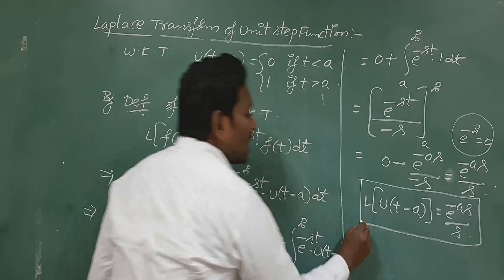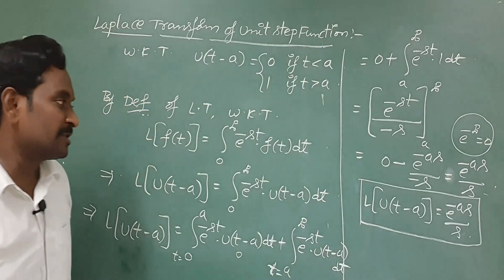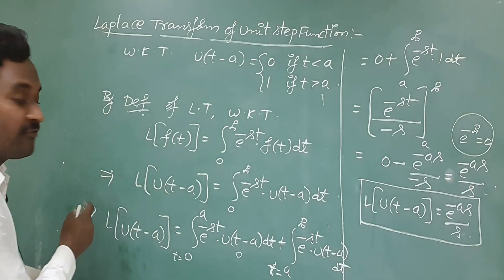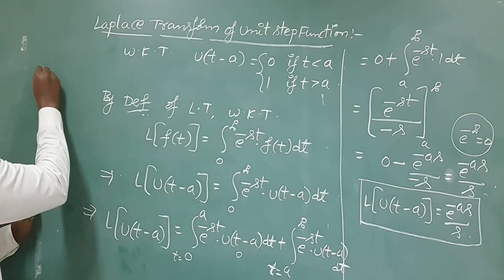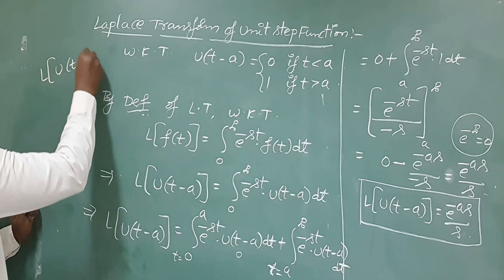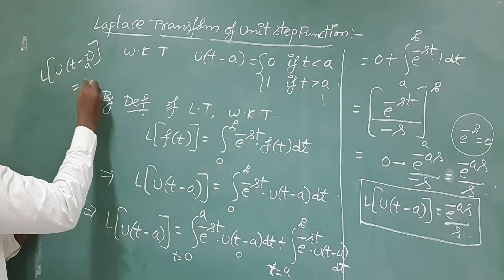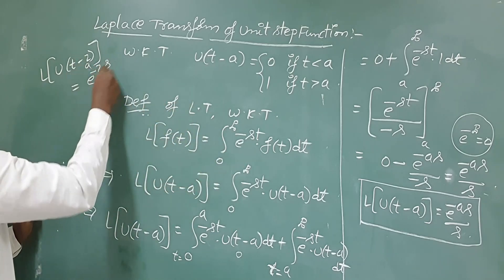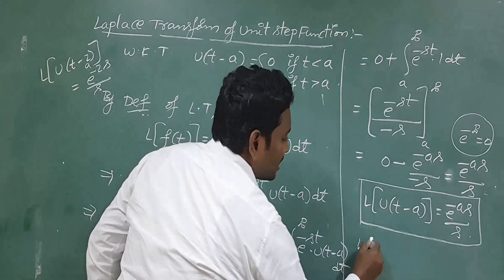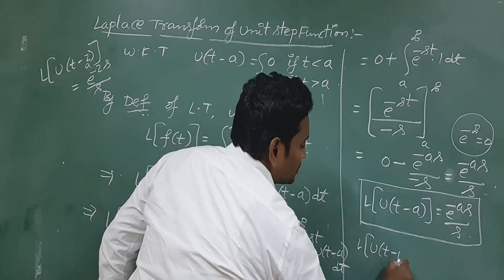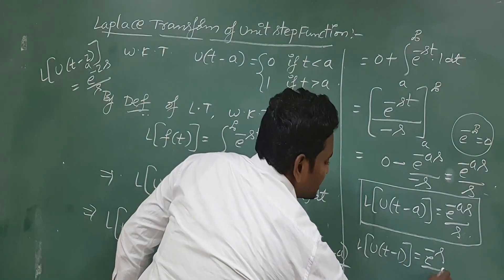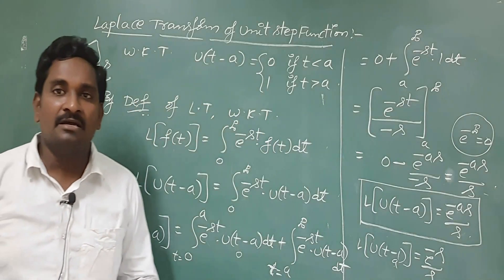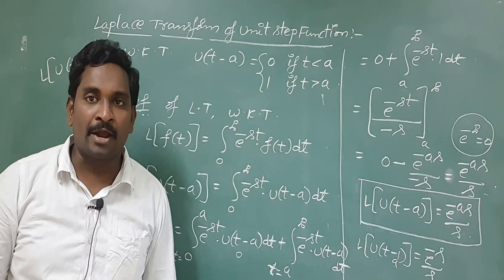Using this formula we can get Laplace transforms at different points. For example, L{u(t - 2)}: here a = 2, so the result is e^(-2s) / s. For L{u(t - 1)}: simply replace a = 1 to get e^(-s) / s. In this way we can find unit step function transforms at different points.